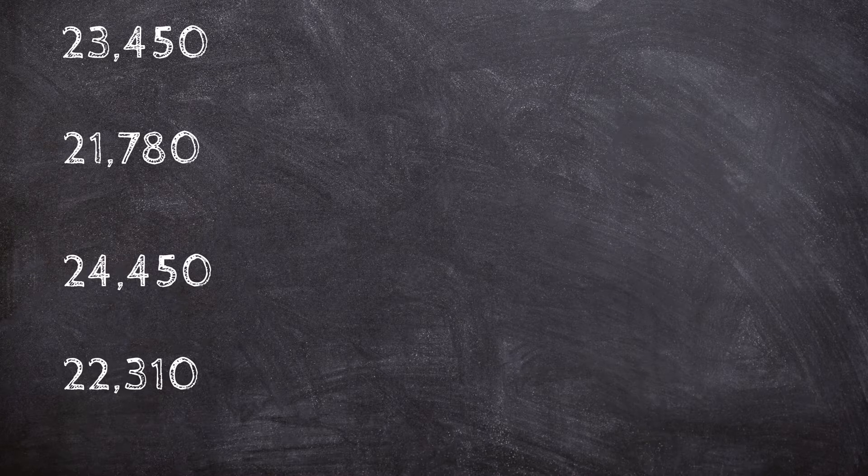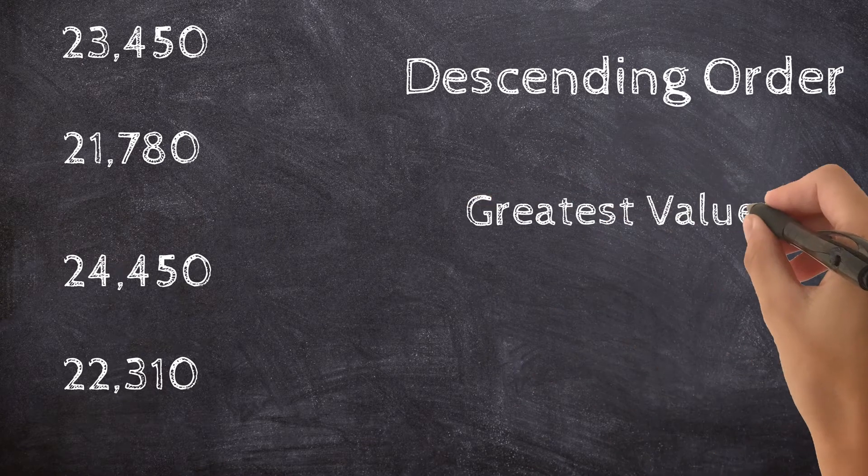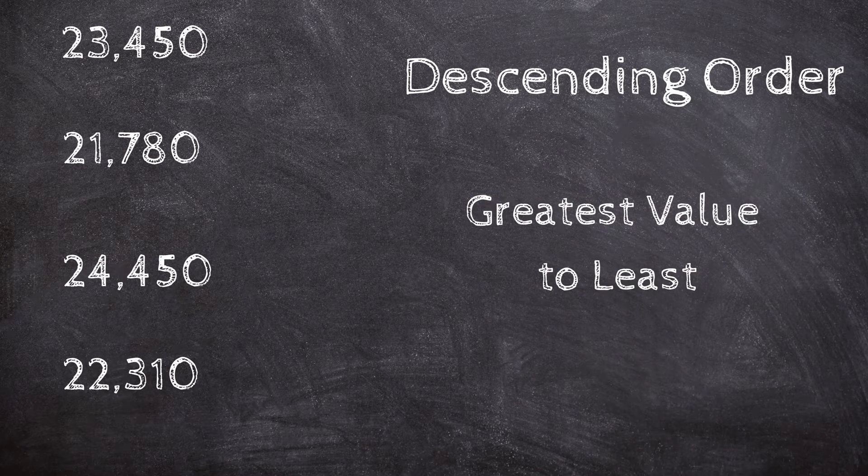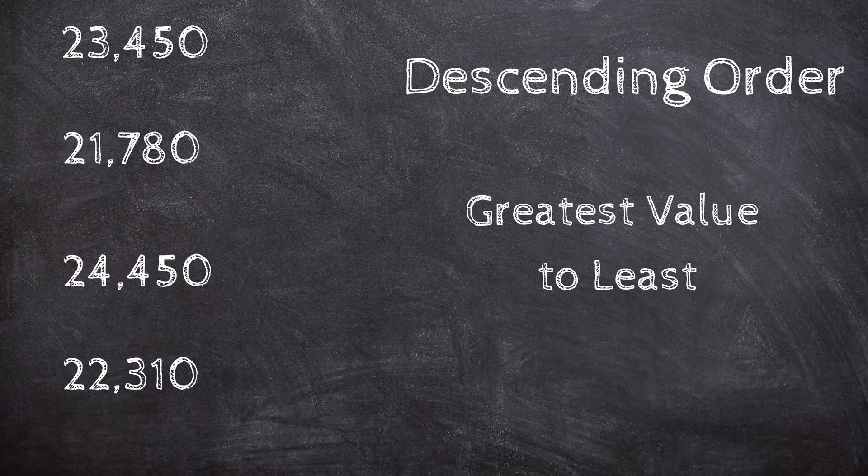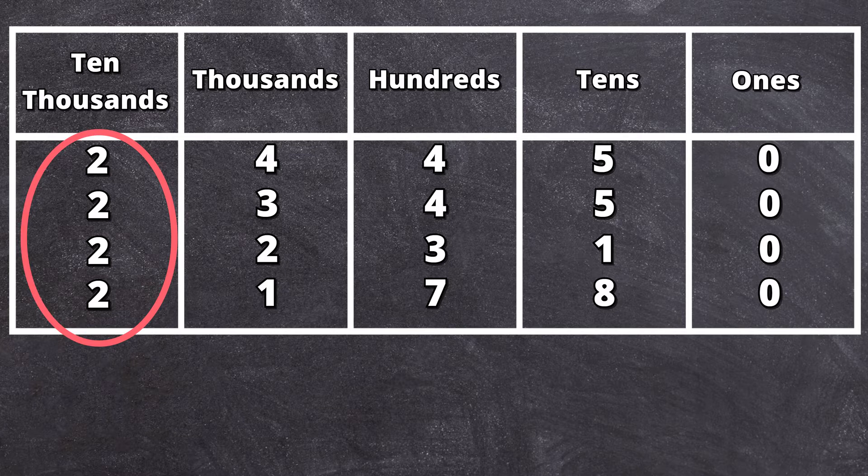In this example, we're being asked to place the following numbers in descending order. Descending order means an order from numbers with the greatest value to the least. We will start with the digits that have the greatest value and then move on to the next. If we use a place value chart, we can see that all numbers have a digit of 2 in the 10,000th place.